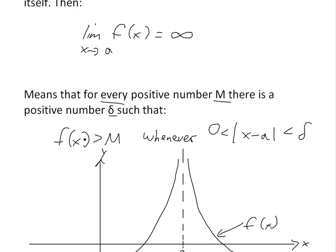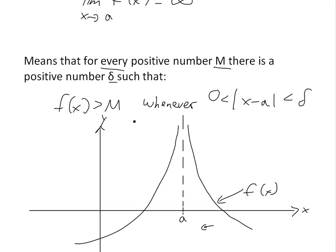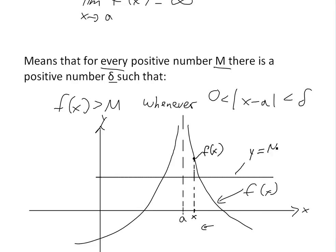Now the idea of this definition: let's say x is somewhere close to a — so there's x, and if we go up we get our f(x) value. What this is saying is f(x) > M for every positive number M. So let's just pick a random positive number M, and we call this y = M — just a horizontal line. As you can see, f(x) is greater than it, and it's only greater than it whenever x is in between this interval.